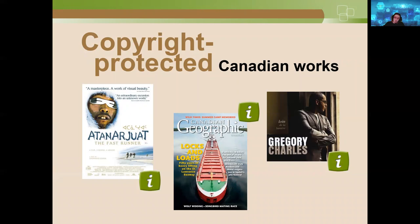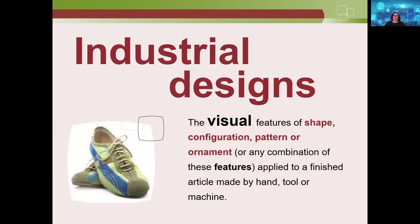Another form of intellectual property you may not have thought of is Industrial Design. The title says it all — it's the design, the visual aspect: the shape, the configuration, the pattern, or the ornament, or any combination of those. The purpose of the design is that it looks appealing; it should be attractive to the eyes.